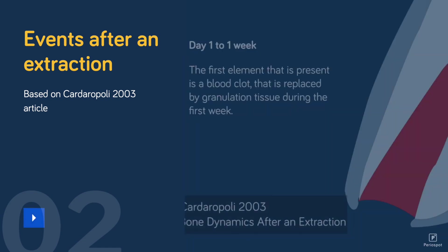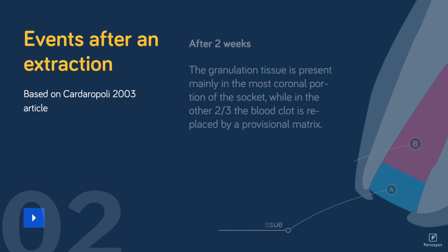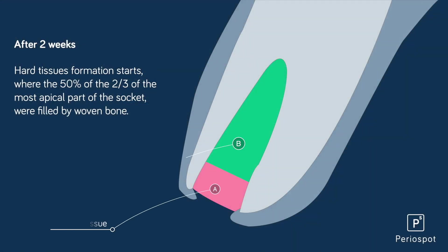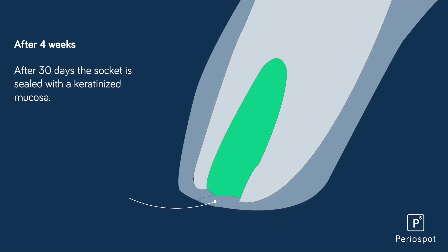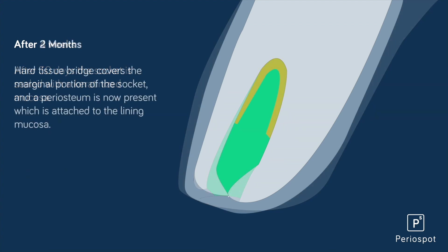We all know what events happen after an extraction. After removing the teeth, we are going to have a collapse of the bone, because all the bundle bone surrounding the teeth — which depends on the blood supply from the teeth — is going to disappear. We are going to have a collapse of the bone walls. You can find this in the literature: articles from Shropp in 2003, Caderopoli in 2003, and also from Araujo and Lindhe in 2003.